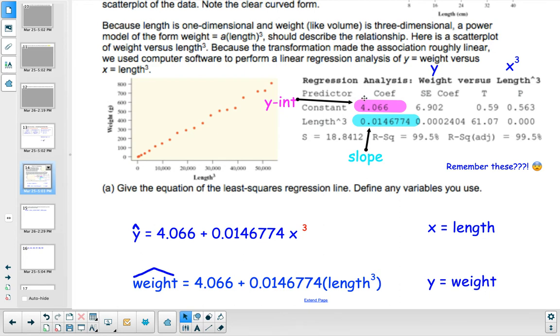Because it's running a linear regression on this data, the length was cubed. So if you enter the cubed length, that's how you can predict the weight, and then you have your defined variables here.